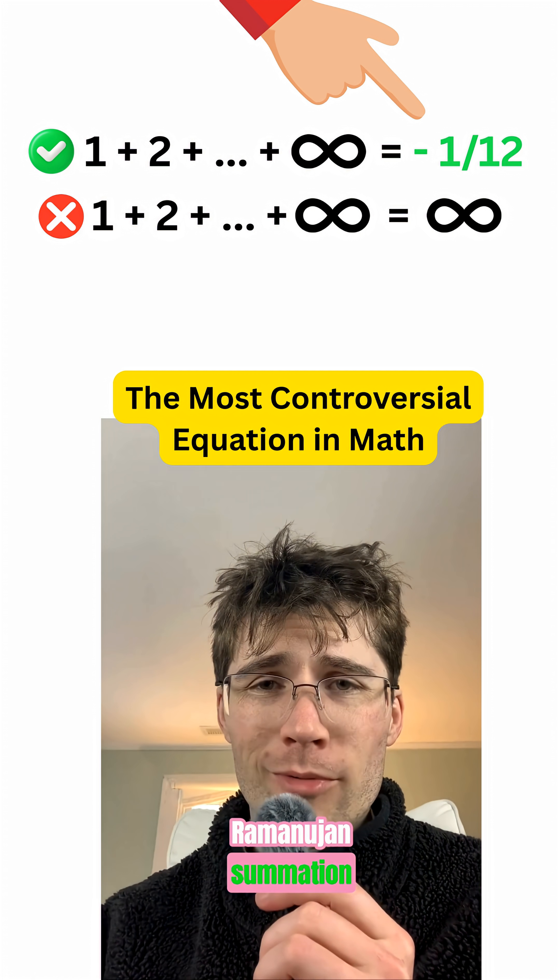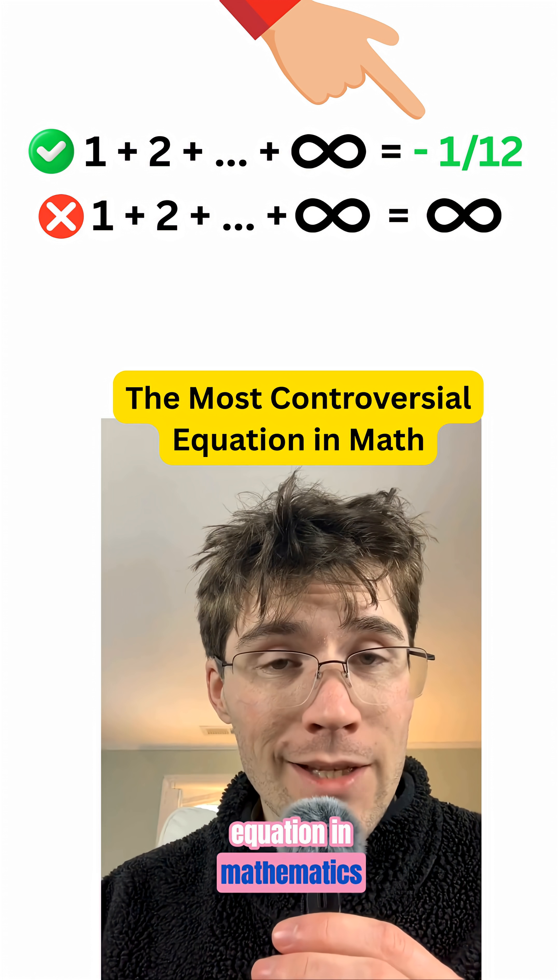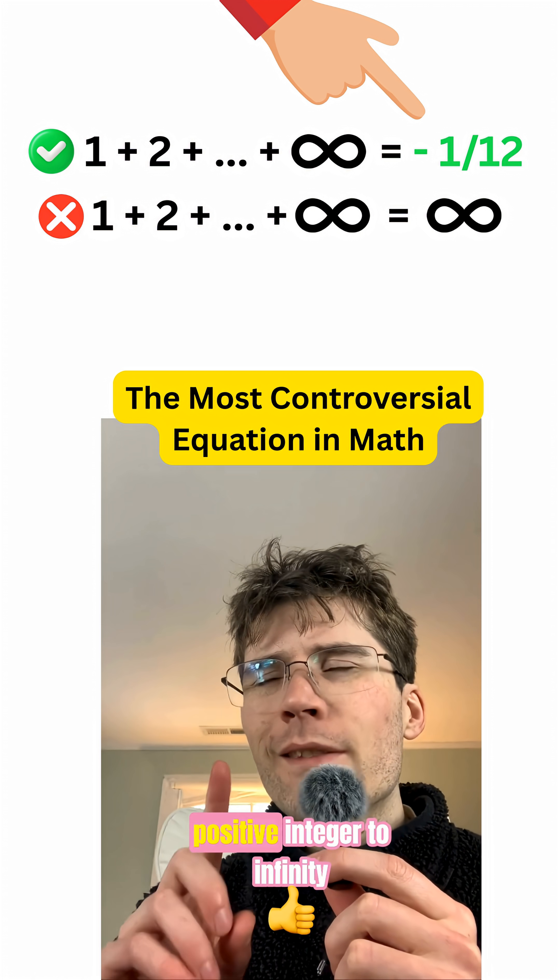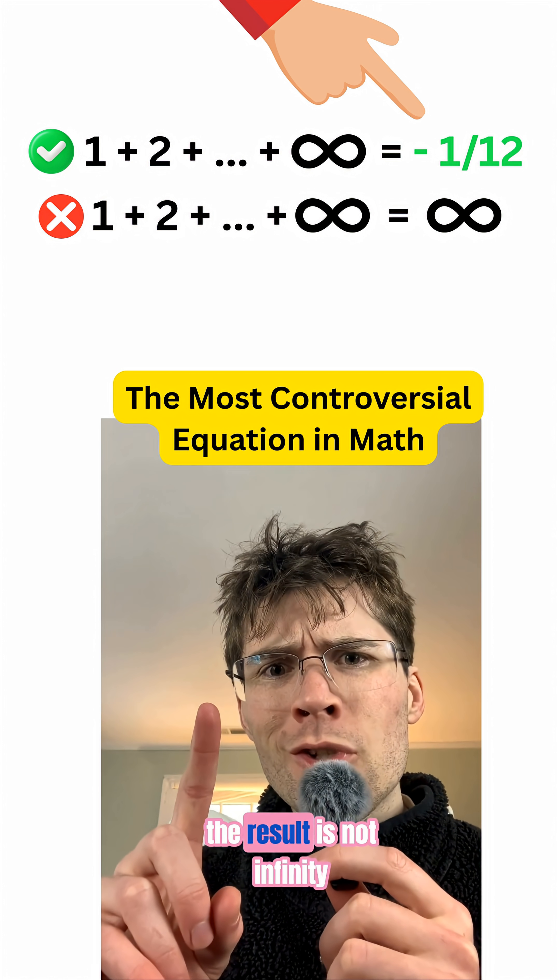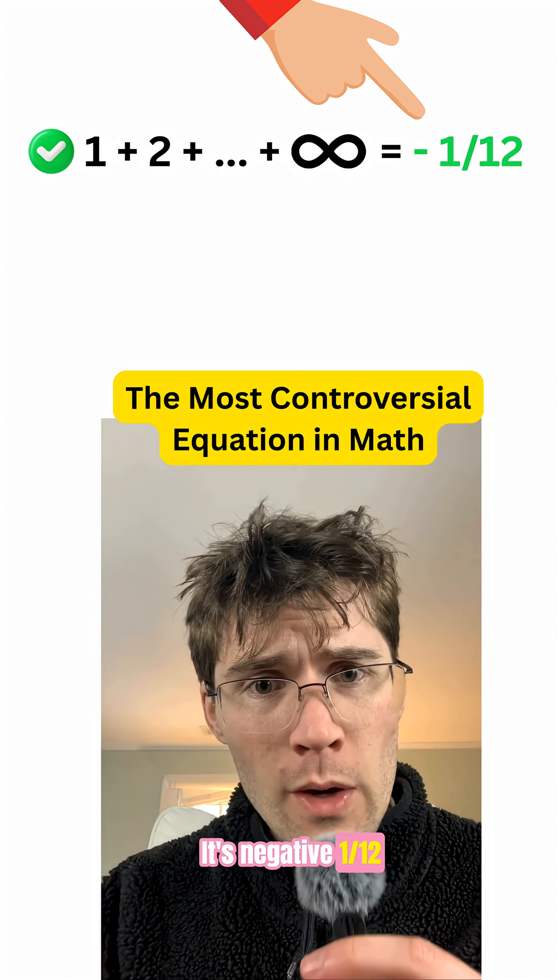This is called the Ramanujan summation. It's the most controversial equation in mathematics. It claims that if you add up every positive integer to infinity, the result is not infinity. It's negative 1/12.